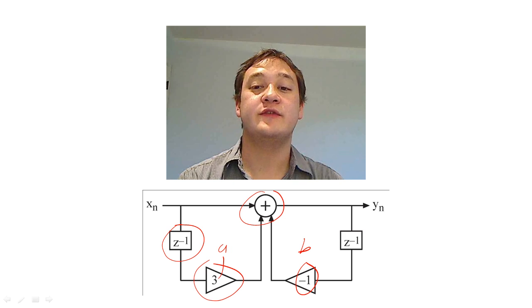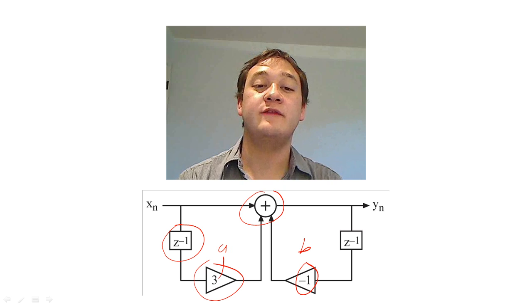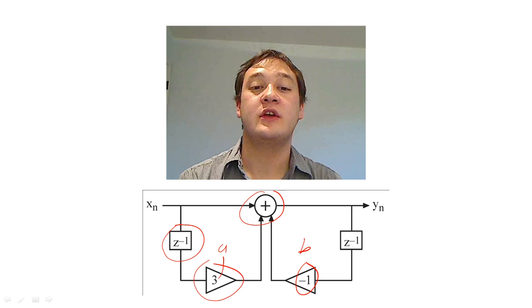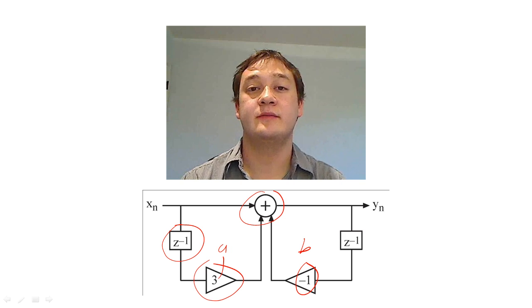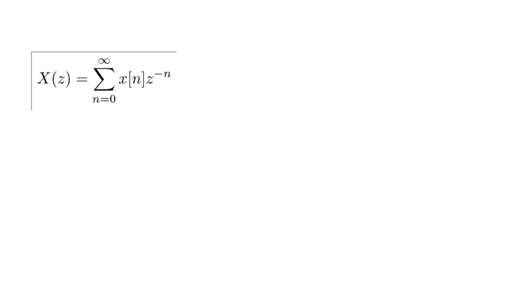The Z-Transform is a complex function of complex variables that allows us to break down a signal, x of n, into an infinite number of simpler signals, much like the Laplace Transform of analog signal processing. The Z-Transform takes the following form.